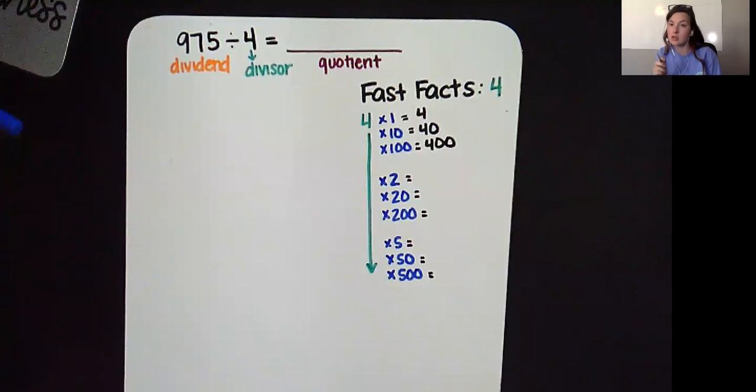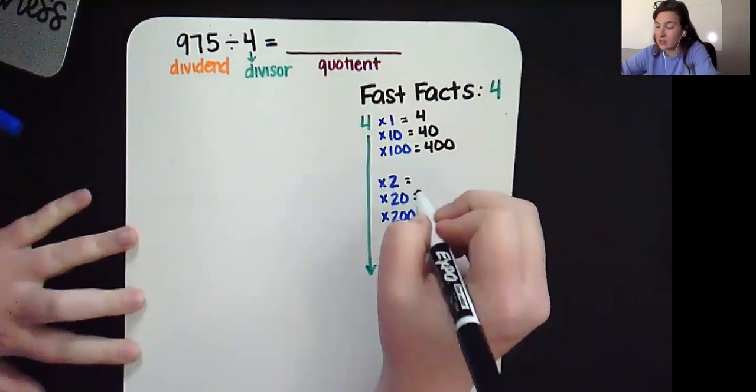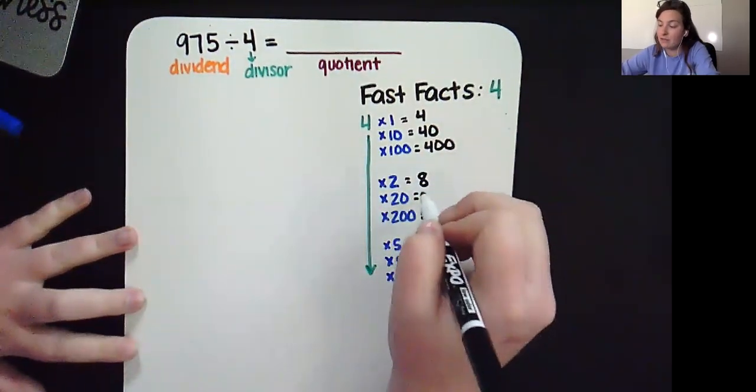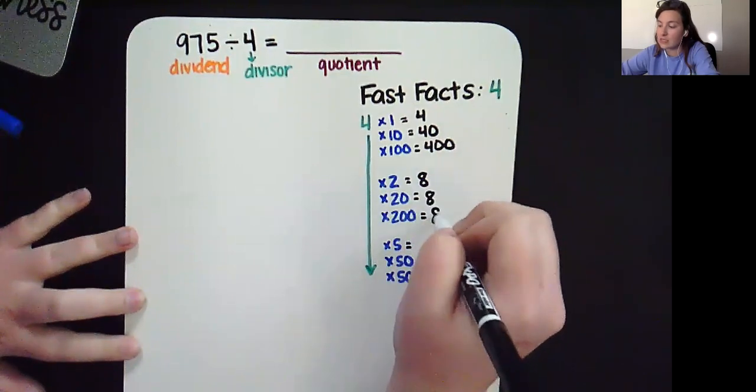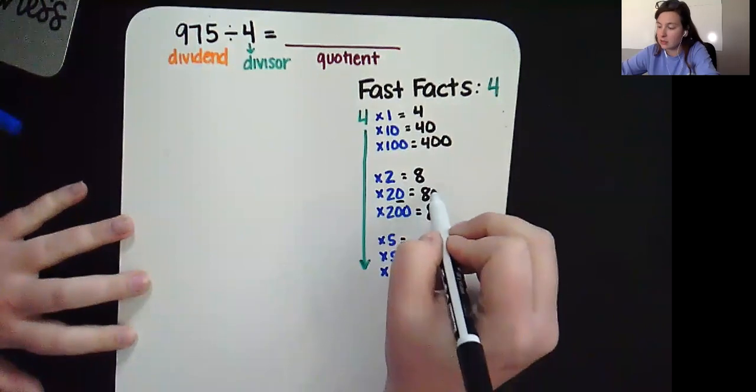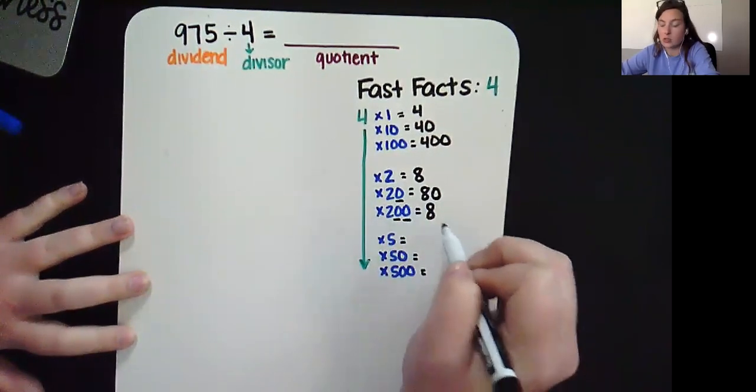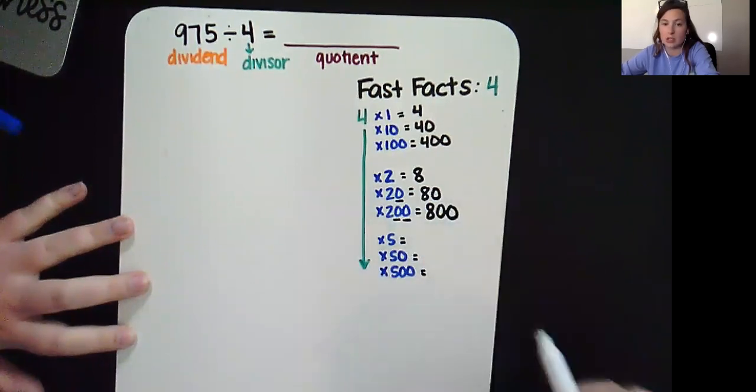Okay, I'm back a little sooner than you probably thought I would be because I want to remind you of the zero trick. So what I can do is go ahead and multiply 4 times 2 and get 8. And I can fill that in for the rest of that group. Now I have a zero in 20. So I need to put a zero here to make it 80. I've got two zeros in 200. So I'm going to put two zeros here to make 800.